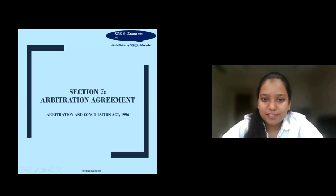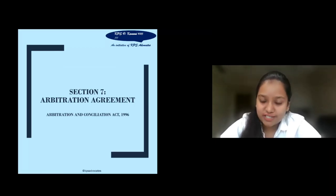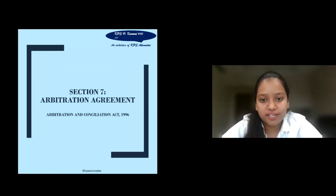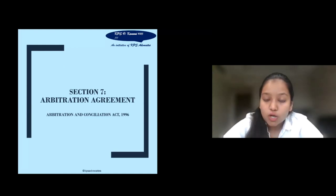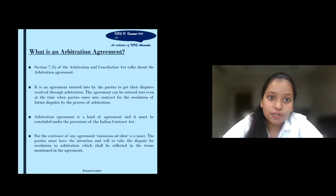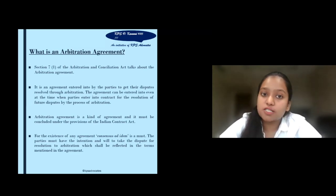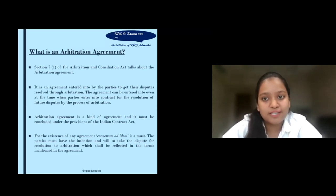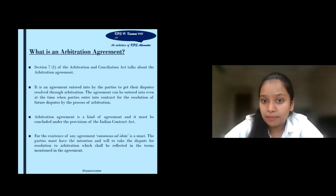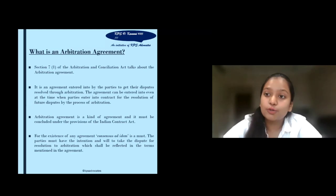Hello, my name is Takshama Maheshwari and the topic of my presentation is Section 7 of the Arbitration and Conciliation Act of 1996. Before moving forward, we should understand what exactly is an arbitration agreement. According to Section 7, Clause 1 of the Arbitration and Conciliation Act, an arbitration agreement is an agreement entered into by parties to get their disputes resolved through arbitration.